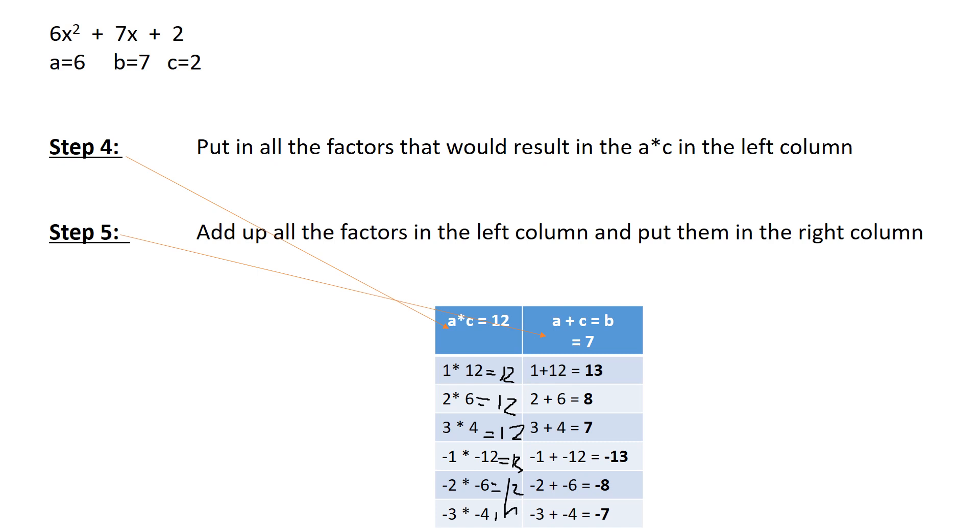Once we have all these individual factors, we're going to add together. A plus C equals B equals 7. We take our 1 times 12 here, 1 plus 12 is 13. 2 times 6 is 12, 2 plus 6 is 8. 3 times 4 is 12. So 3 plus 4 equals 7. We found where our A plus C equals B, which is 7, right here.